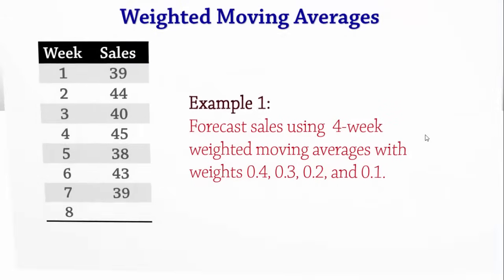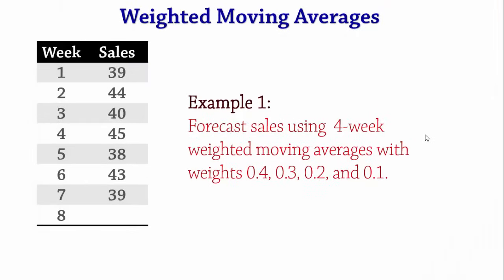We will be using this time series data from 7 weeks of sales and we want to forecast sales using 4 week weighted moving averages with weights .4, .3, .2, and .1.